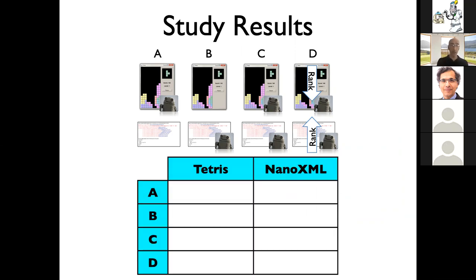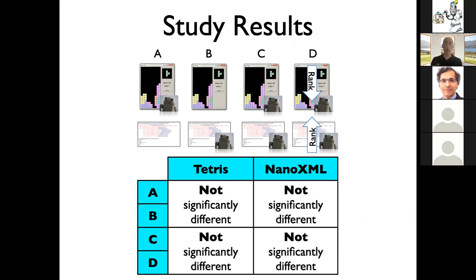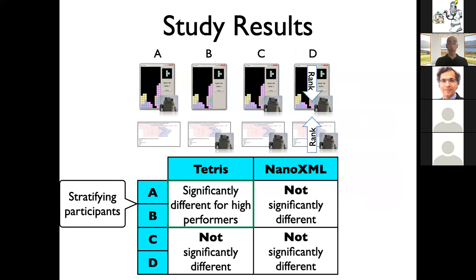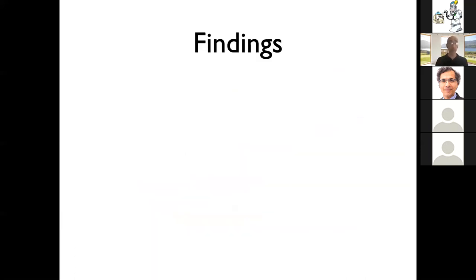Here are the study results. We measured performance in terms of locating the bug and speed of locating it for the various groups — A versus B versus C versus D. For A versus B on Tetris, there was no significant difference in performance. Sadly, we basically didn't observe any statistically significant difference for any of these comparisons. However, there was a silver lining: when we stratified participants by expertise, developers with industrial experience performed significantly better debugging Tetris with the tool than without it.